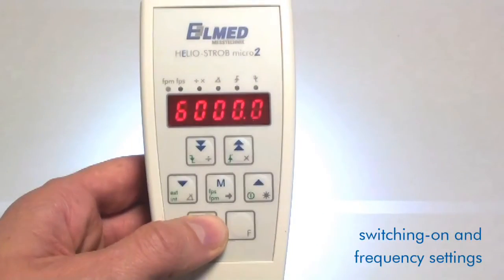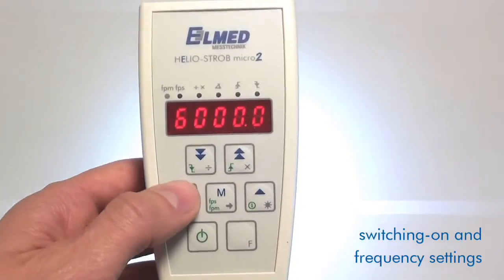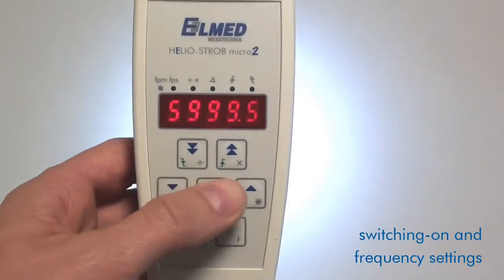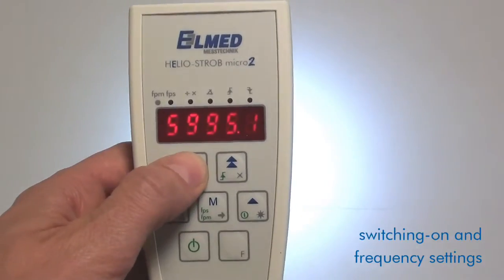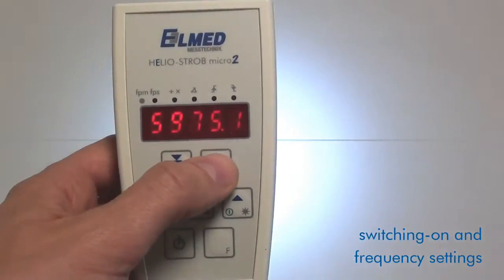For switching on the stroboscope, please press the ON key. Now the instrument flashes with the last set frequency. The current value will be saved when switching off the instrument. By pressing the blue arrow keys, you can change the flash frequency in small steps. Using the blue double arrow keys, you can adjust the frequency in large steps.